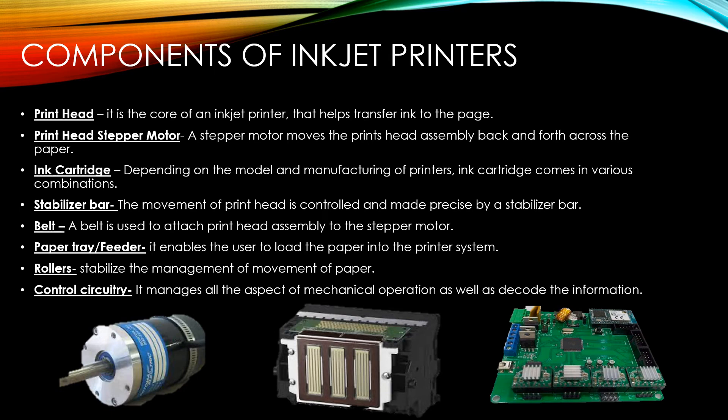The ink cartridge is basically the ink used in the printer. The stabilizer bar controls and makes precise the movement of the print head. The belt is used to attach the print head assembly to the stepper motor. The paper tray enables the user to load paper into the printer. Rollers stabilize the movement of paper. The control circuitry manages all aspects of mechanical operations as well as decodes the information. Here you can see the print head stepper motor, the print head, and the control circuitry.